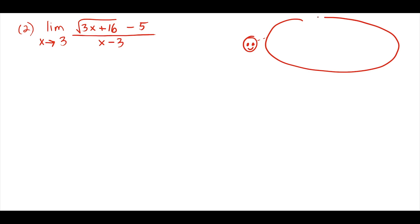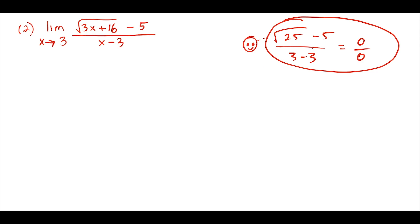When we plug in, we get the square root of 3 times 3 is 9, plus 16 is 25, minus 5, over 3 minus 3. The square root of 25 is 5, so we get 0 over 0. The most common mistake is automatically saying the limit doesn't exist. But 0 over 0 is indeterminate, which means we have more work to do — we need to do some algebra.